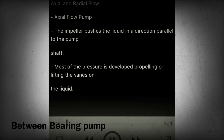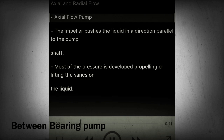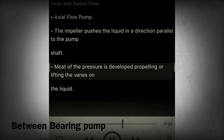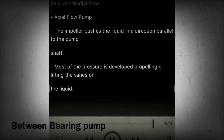Section 11 - Axial and radial flow. Axial flow pump: the impeller pushes the liquid in a direction parallel to the pump shaft. Most of the pressure is developed by propelling or lifting the vanes on the liquid.